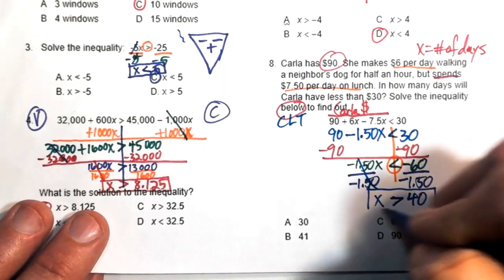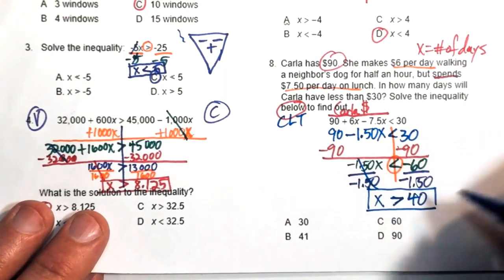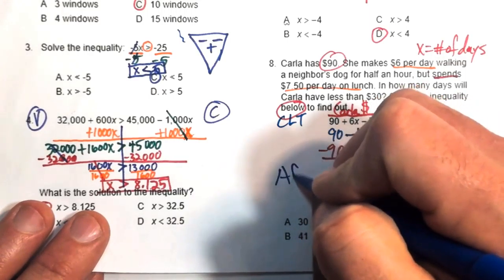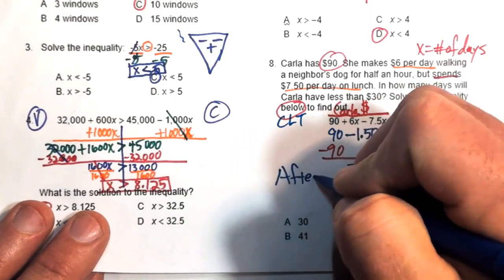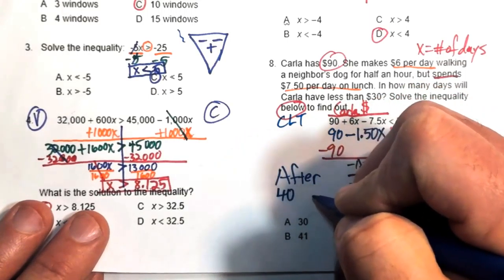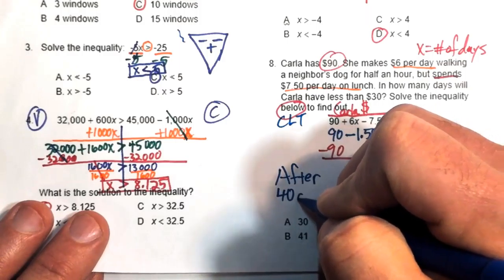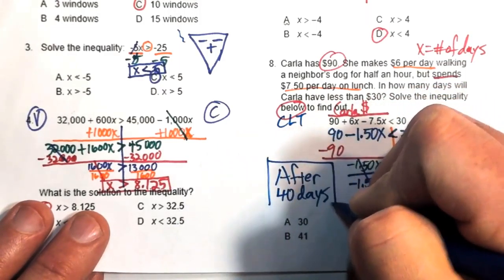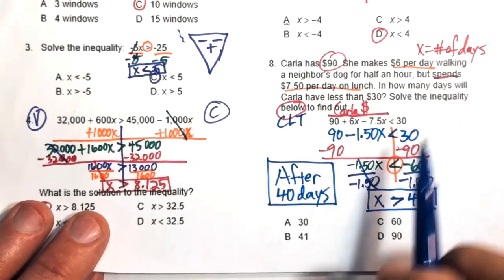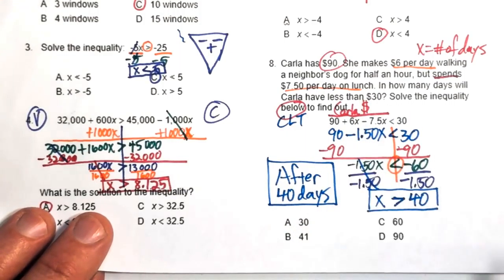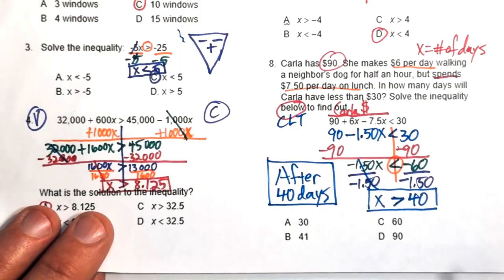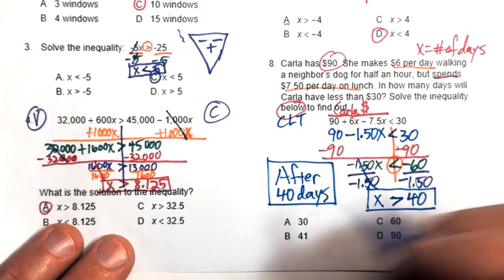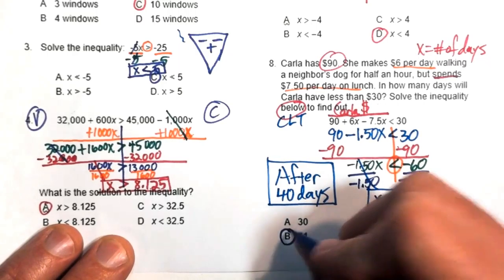So x greater than 40 means after 40 days, Carla's balance will be less than $30. The answer is 41 days.